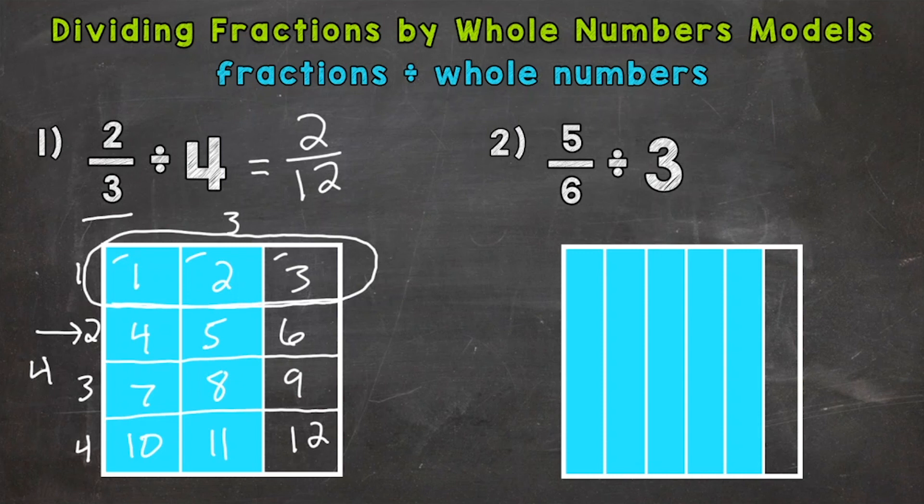So our answer is two-twelfths. Now we need to check to see if we can simplify. And we can. Two and twelve have a common factor of two. So divide both by two. And we get a simplified answer of one-sixth.